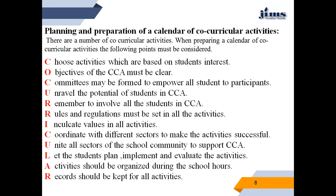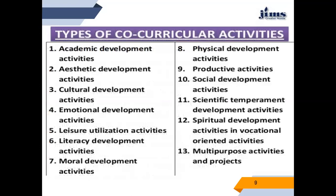Number twelve, records should be kept for all activities. There are various types of co-curricular activities: activities for academic development, aesthetic development, cultural development, emotional development, leisure utilization, literary development, moral development, physical development, productive activities, social activities, scientific temperament development activities, spiritual development activities, vocational oriented activities and multipurpose activities and projects.